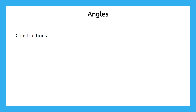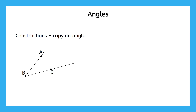But today's lesson is all about the constructions. First, you'll learn how to copy an angle. For example, if we have angle ABC, then we can use a compass and straight edge to construct an angle that is congruent, or the same. Here's our copy of angle ABC, and it's labeled angle DEF.